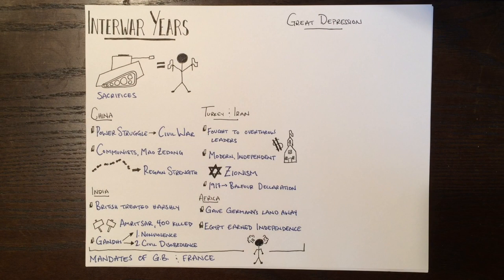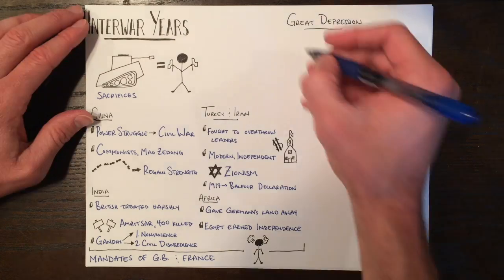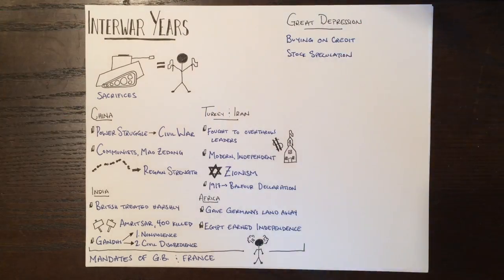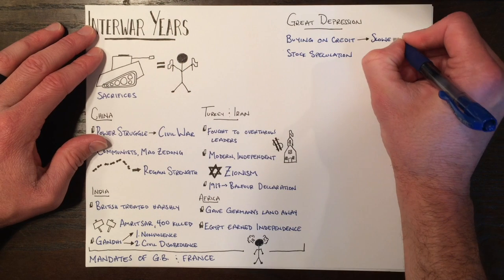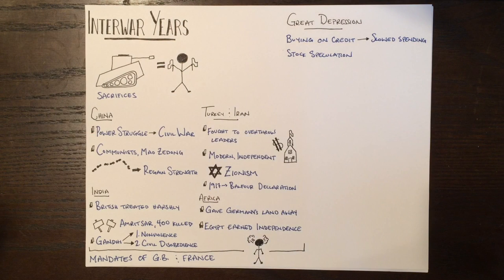Economically, everyone across the globe was suffering, including the United States. In the U.S., prior to the war and during, consumers saw an economy full of opportunity. Credit was available to those that needed it and were able to buy the goods that they wanted, rather than what they needed. Once this credit hit its limit, people started to slow their spending. Others, investing in the stock market, saw this as an issue and started to sell their stocks. As more and more people started to do the same, the stock market crashed on what they referred to as Black Tuesday.